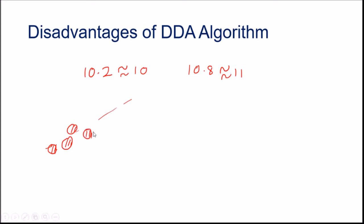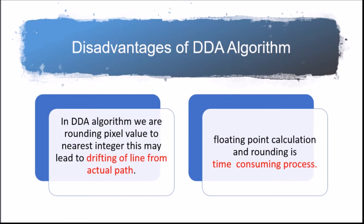The disadvantage is you are doing floating point operations and you are rounding it to the nearest value, so it is definitely a time-consuming job. I will show you those disadvantages of DDA algorithm.